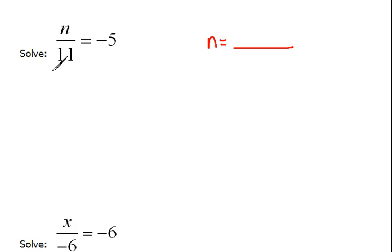And remember, when things are written as a fraction, that's just a very shortcut way of saying divided by. So this literally says n divided by 11 is equal to negative 5. Well, we think, how do we undo that division? Instead of dividing by 11, the opposite would be to multiply by 11.